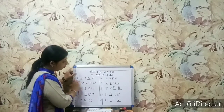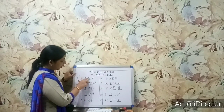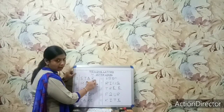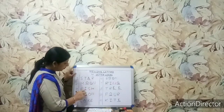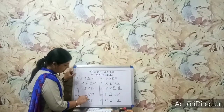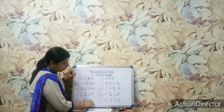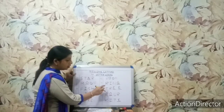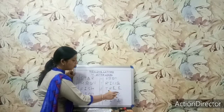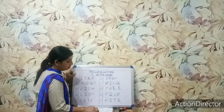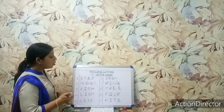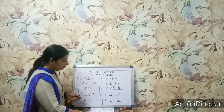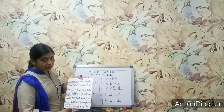So, children, these are the 4 letter words which we have done. We have filled the blank spaces. Let's revise the words again: S-T-A-R — Star. M-O-O-N — Moon. F-I-S-H — Fish. L-I-O-N — Lion. C-A-K-E — Cake. B-O-O-K — Book. R-I-N-G — Ring. T-R-E-E — Tree. F-O-U-R — Four. K-I-T-E — Kite. Now, children, you have to revise all the 2, 3 and 4 letter words — missing letters — at your home, and make charts like these so that you can practice easily and comfortably.